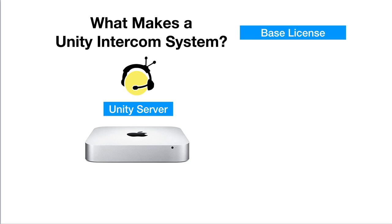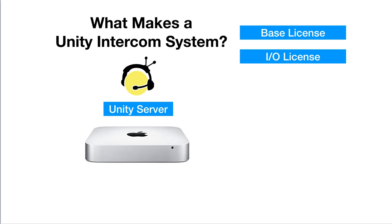I also want to mention the next item. You pretty much will find everyone buying an IO license. There's the base license, which licenses the Mac and gets you going. The IO license allows you to connect to an IO device — that's your in and out license. Without this license, you're going to be severely limited. You can't connect to a soundboard or a third-party comm system like an RTS or Clear-Com system. And it's one of our less expensive items. So I pretty much assume everyone needs the base and everyone needs the IO.